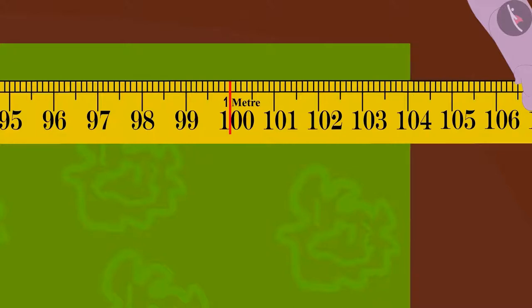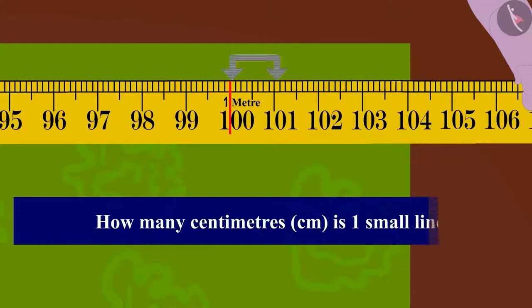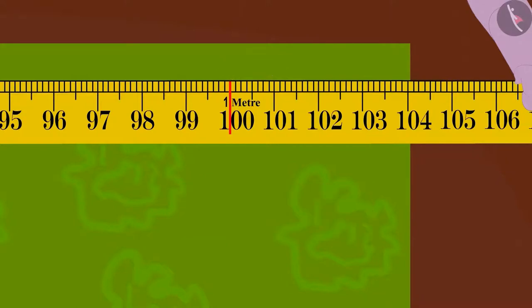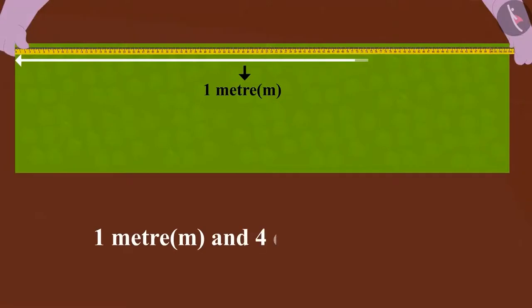See, the length of the material is more than the length of one meter. But how many centimeters is one small line? One centimeter. This way, the length of this material is one meter and four centimeters.